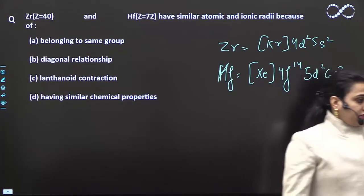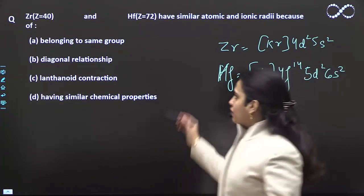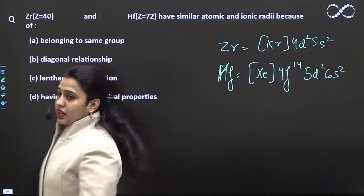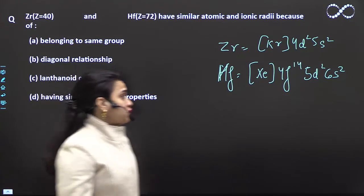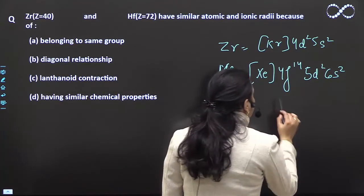So here we are seeing how different these two configurations are, but still they have the same atomic and ionic radii. That is due to the lanthanoid contraction.